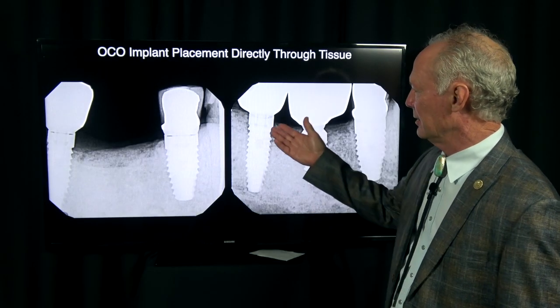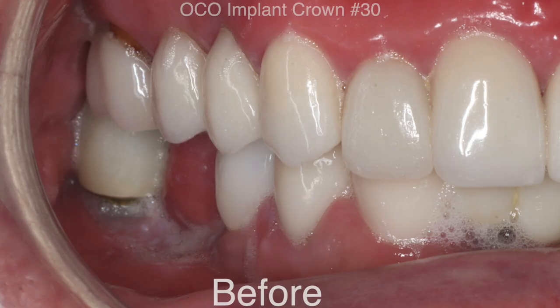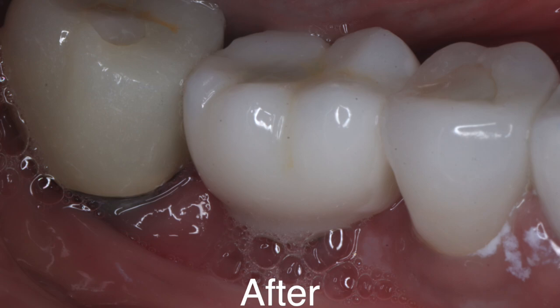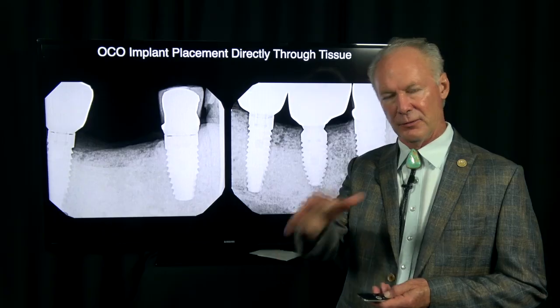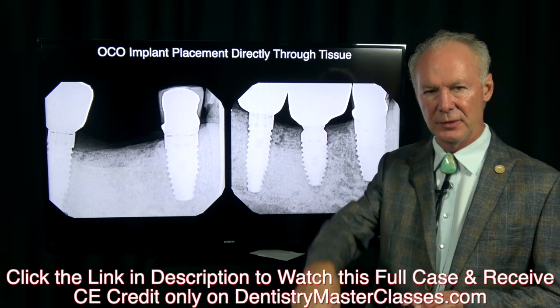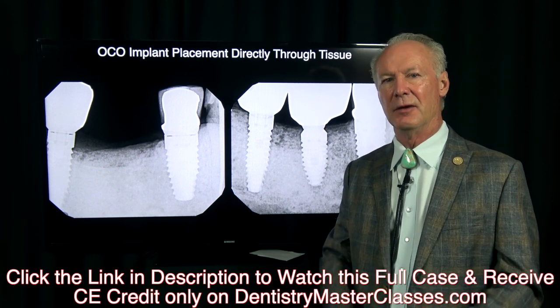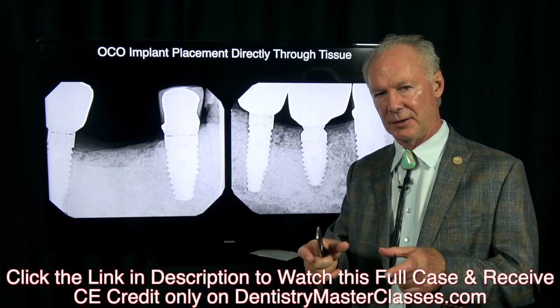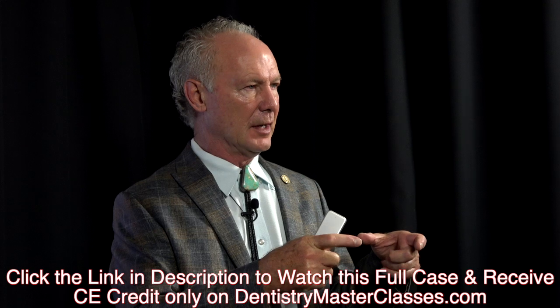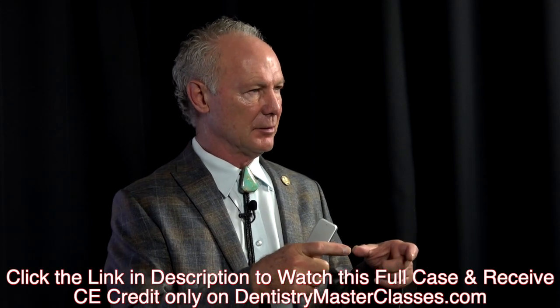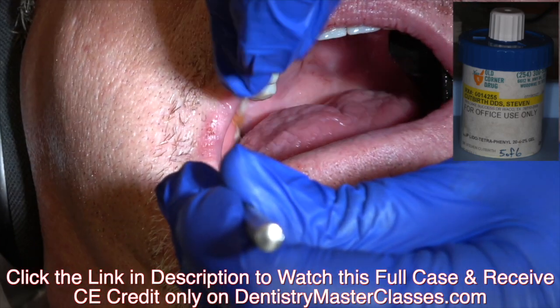In this video, I'm going to be demonstrating how to place an implant directly through the soft tissue. This is the OCO implant system. I really like it because it has shoulders on the drills. A lot of people like to reflect a flap if you have an edentulous area and place the implant with the flap reflected. I prefer to go through the soft tissue because when you place the healing abutment on the implant, the emergence profile of the soft tissue forms around the healing abutment while the implant is osseointegrating for three months.